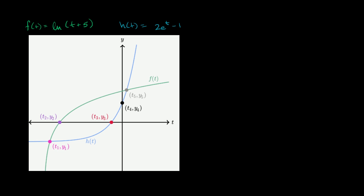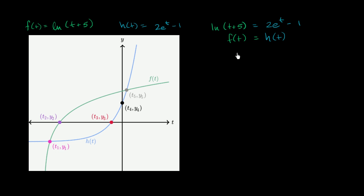For the first case — setting the two functions equal — we ask: for what values of t does the natural log of t plus 5 equal 2e to the t minus 1? That's the same as asking for what t is f of t equal to h of t. Two functions are equal at a given t when they produce the same output, meaning the same y value. So we're essentially asking: where do these two functions intersect each other on the graph?